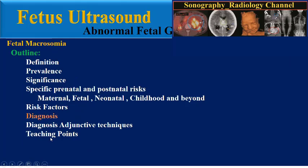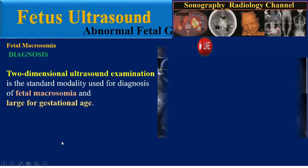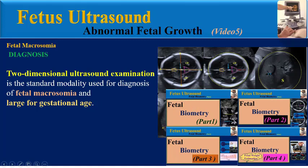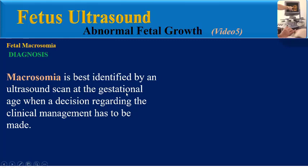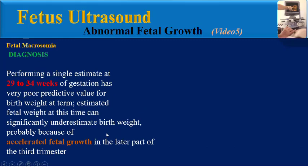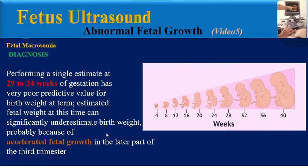How can we diagnose fetal macrosomia? Two-dimensional ultrasound examination is the standard modality used for diagnosis of fetal macrosomia and large for gestational age. The complete explanation of fetal biometry was presented in the fetal biometry course. Macrosomia is best identified by an ultrasound scan at the gestational age when a decision regarding clinical management has to be made. Performing a single estimate at 24 to 34 weeks of gestation has very poor predictive value for birth weight at term.